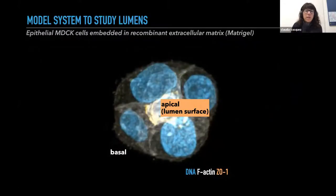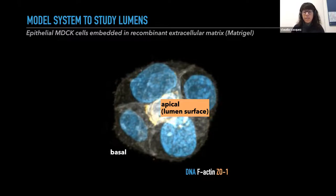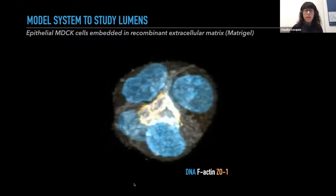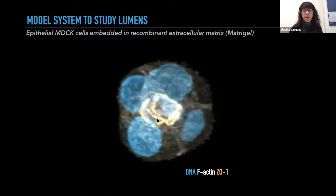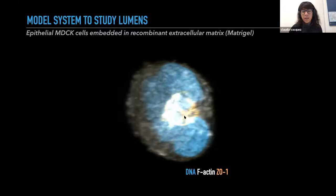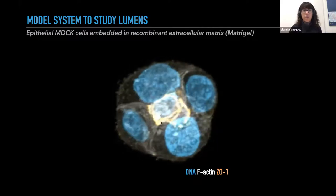To study this, I wanted to use a very simple system. These are MDCK cells — Madin-Darby canine kidney cells — embedded in a recombinant extracellular matrix, Matrigel. What's amazing about these cells is that even though they were isolated from a cocker spaniel kidney about 60 years ago, they still polarize and form lumens. This is an image of cells in Matrigel 48 hours after embedding, with the apical surfaces outlined in orange, outlining the lumen. These cells are a great model because they use the same polarization mechanisms observed in the kidney, liver, and other organogenesis.